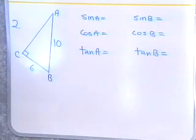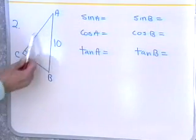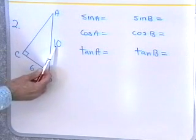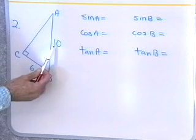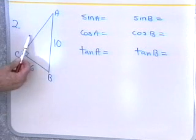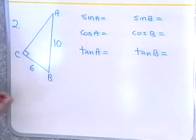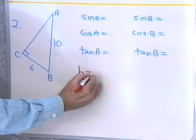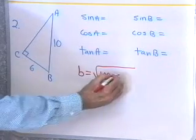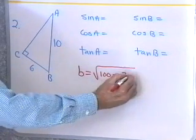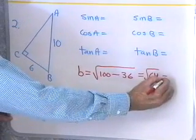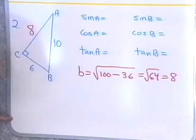Problem number 2: I have a right triangle labeled A, B, and C. The hypotenuse C is 10, and side A — opposite angle A — is 6. I need to find the length of side B. Using the Pythagorean theorem, B equals the square root of 10 squared minus 6 squared, which is the square root of 100 minus 36, the square root of 64, which is 8. So side B is labeled 8.